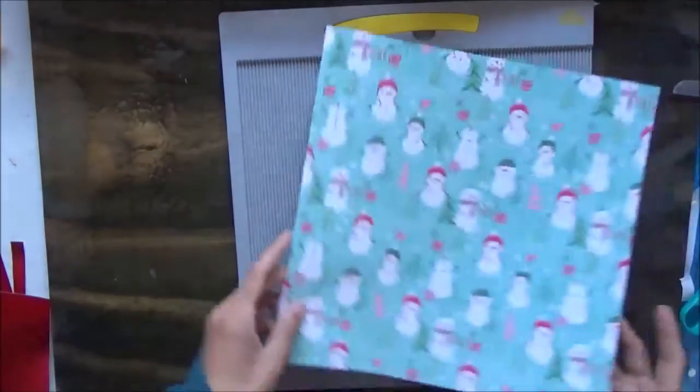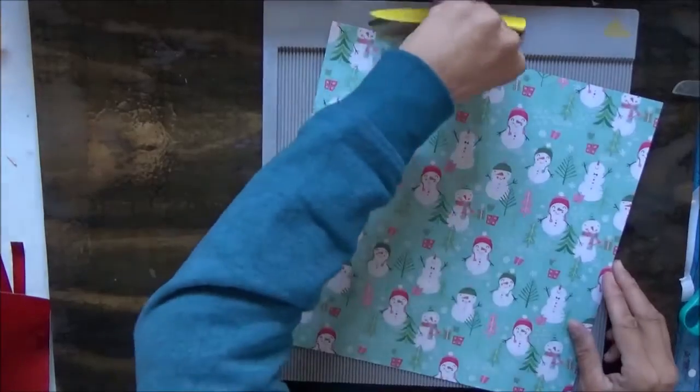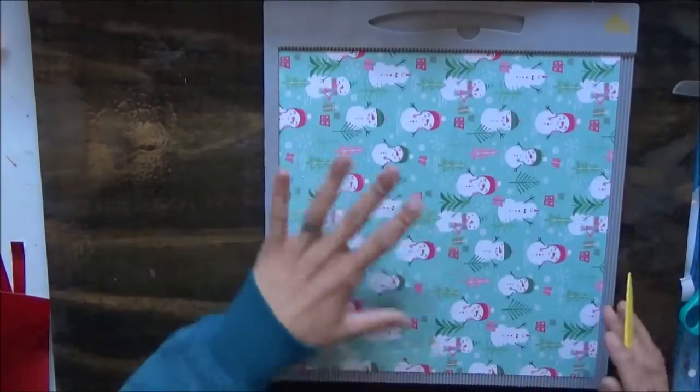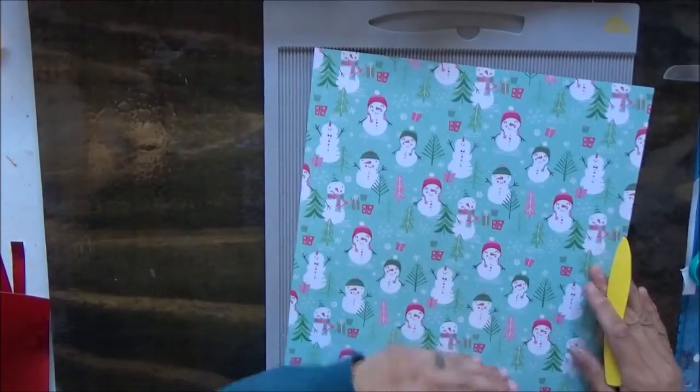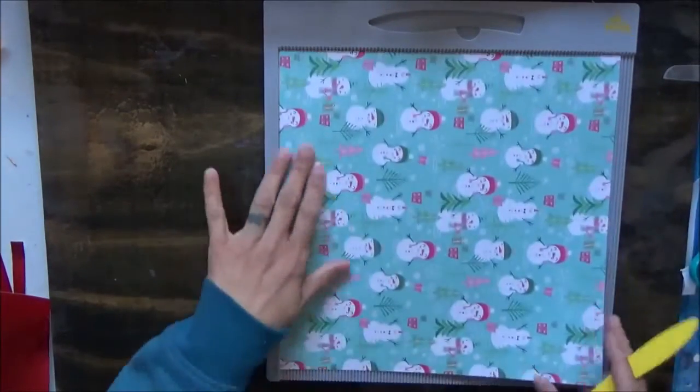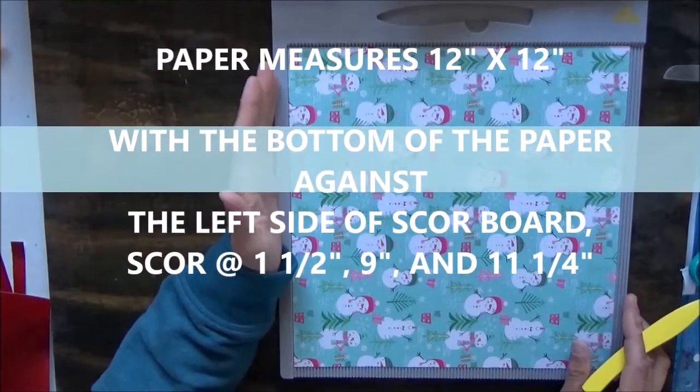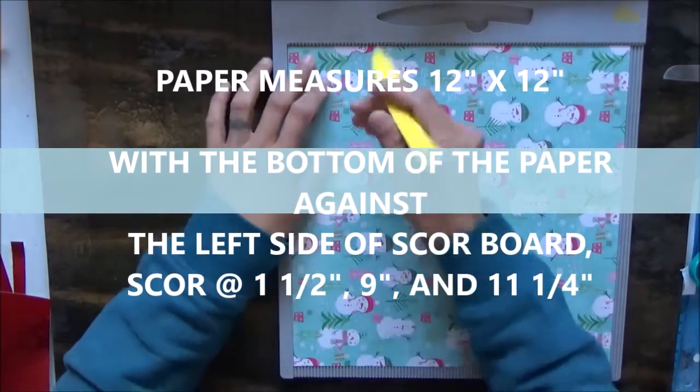Let me make a point to tell you this because I've messed up on a project and I don't want to do that again. We know that we want the paper to go like this and we want this to be our bottom. What we're going to do is turn the paper so that the bottom of our paper is on the left side of the scoreboard.